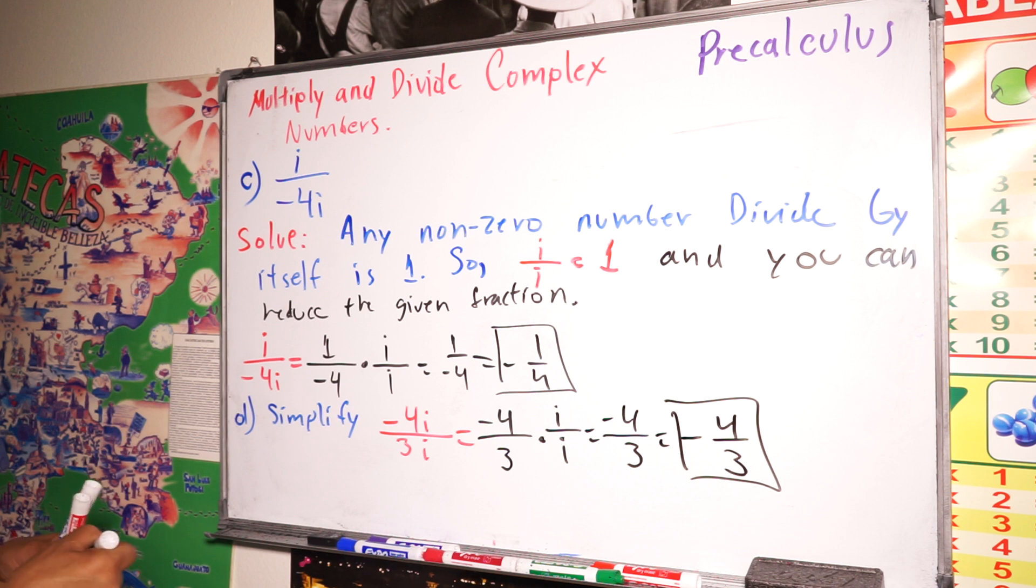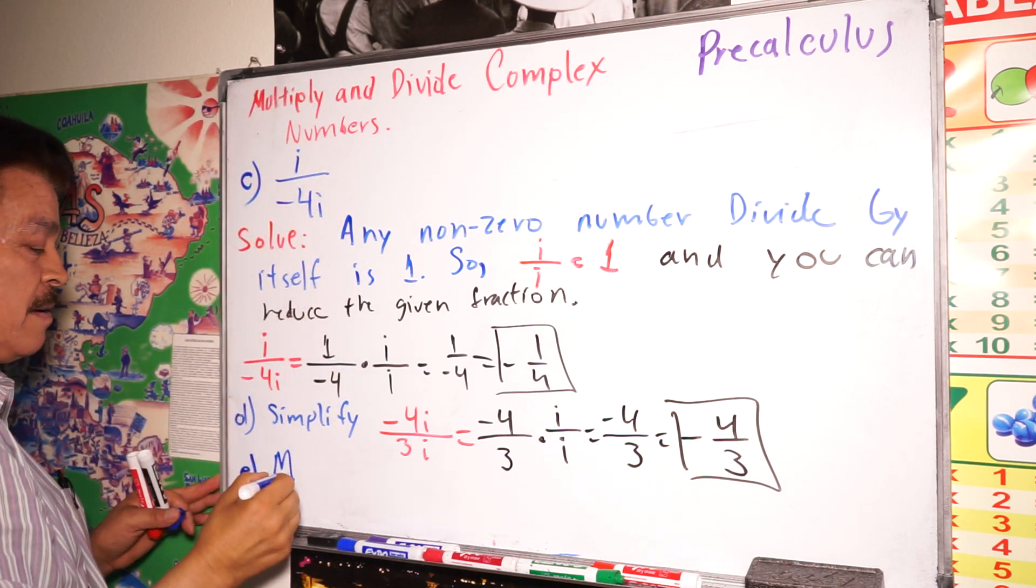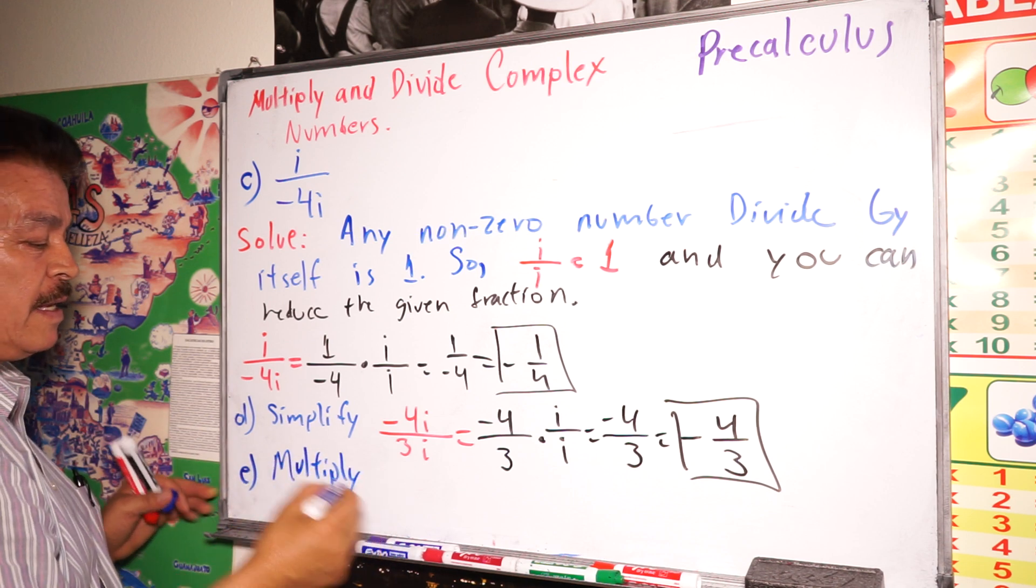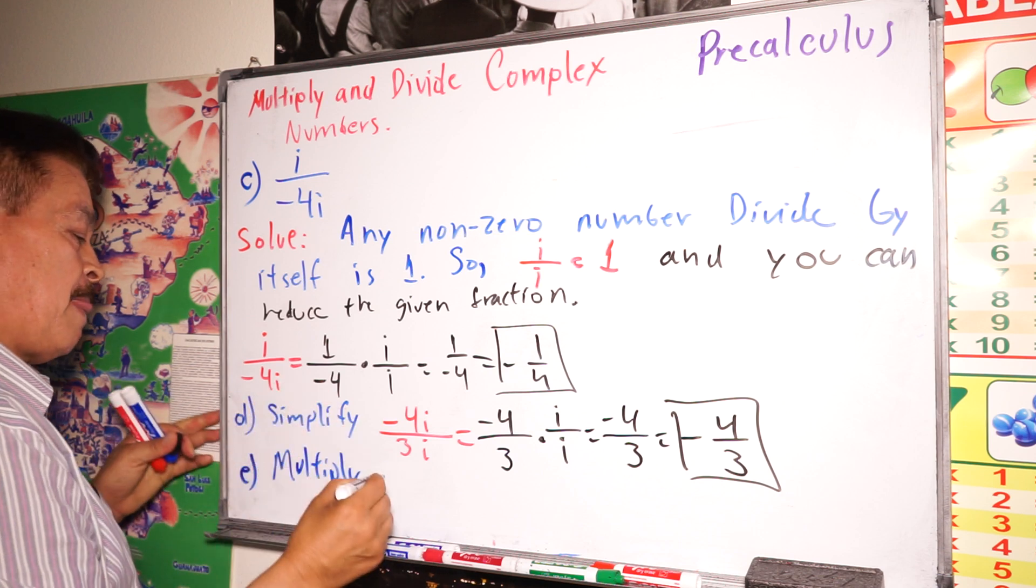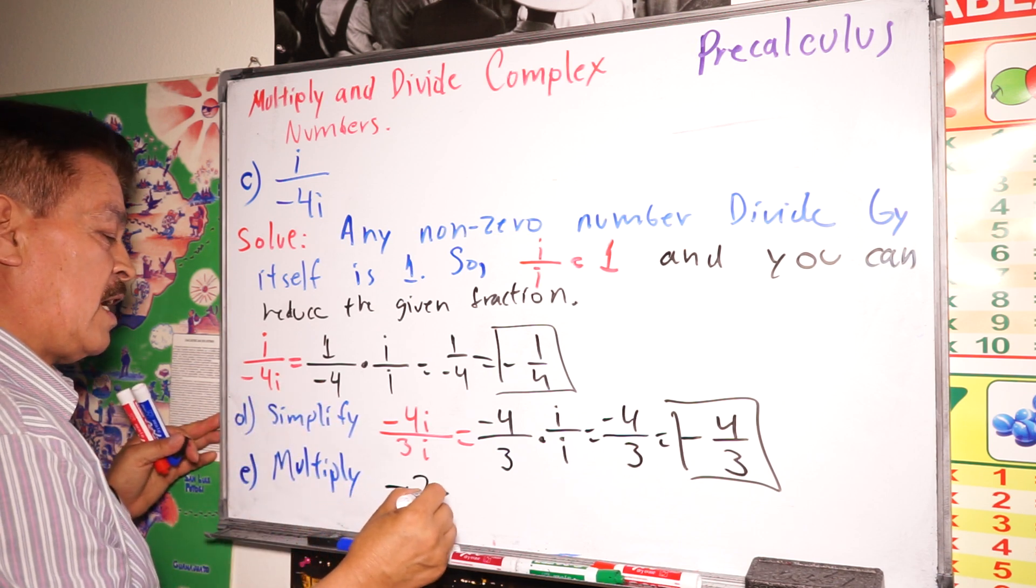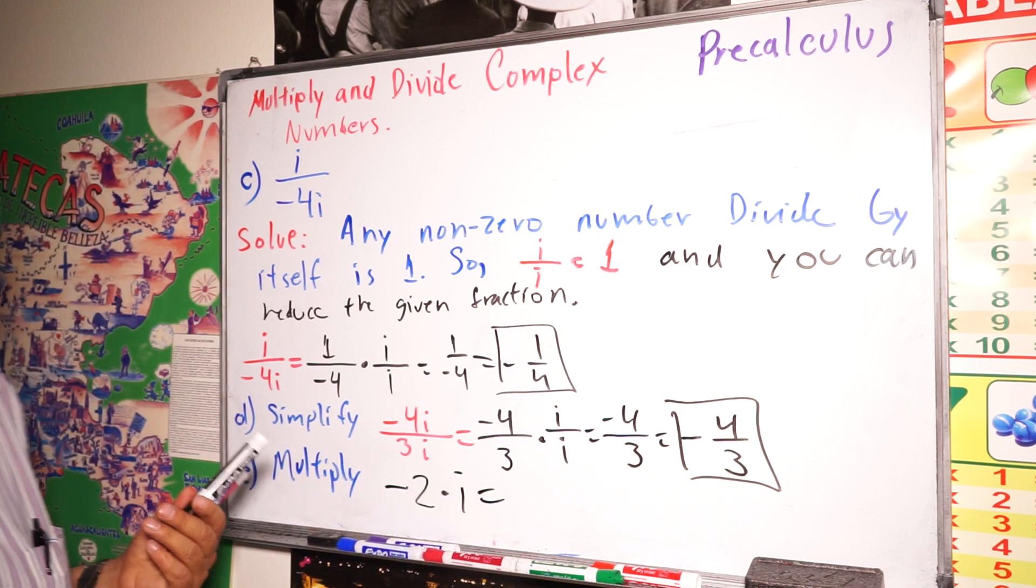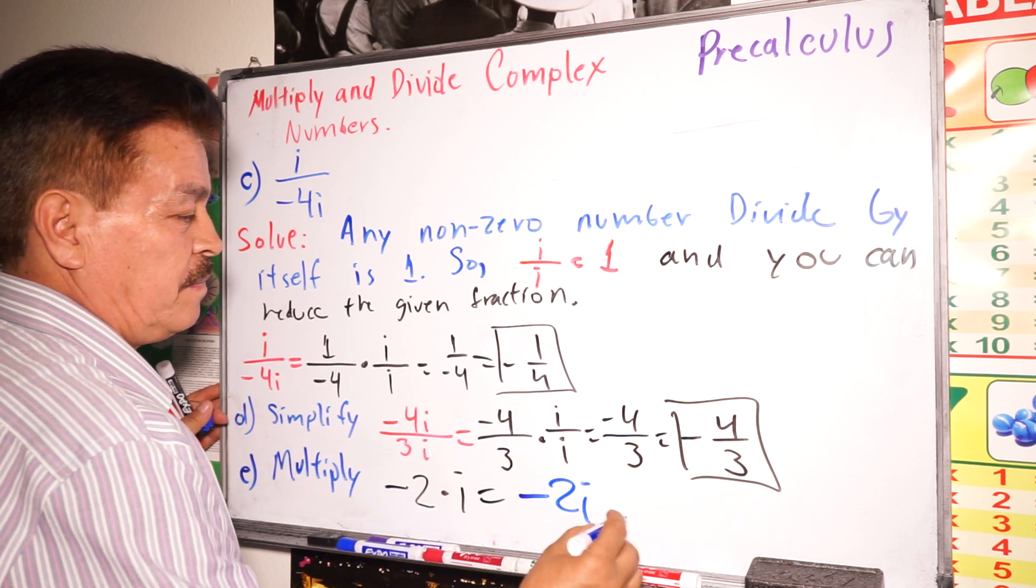And the last one, a simple problem. Just multiply. This is, again, multiply. Let's write negative 2 times i. How much is it? Negative 2 times i. Very simple question. This is negative 2i.